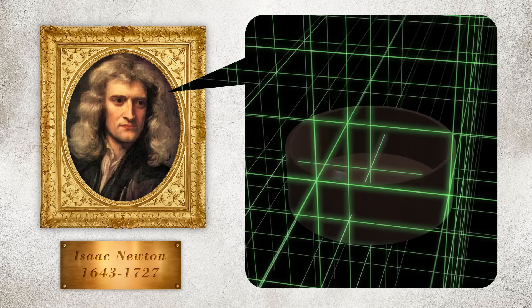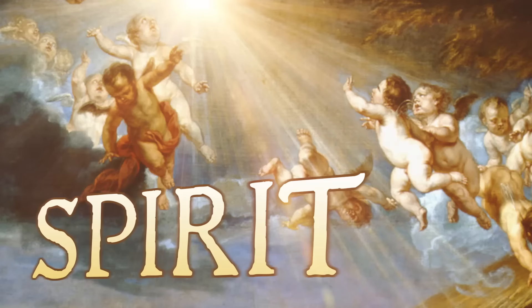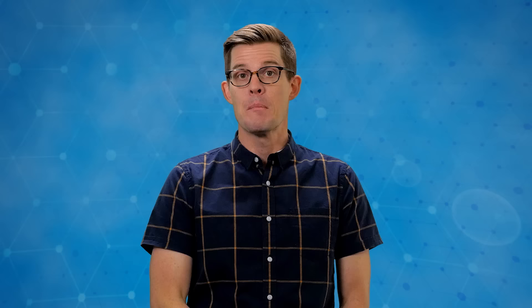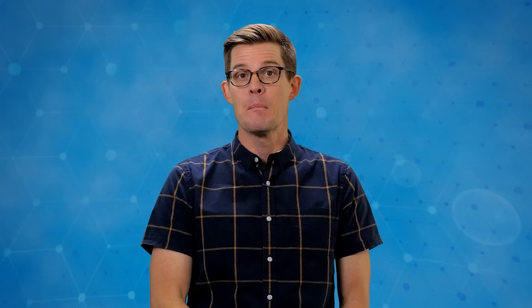Newton's solution to this riddle was that space must be a thing—an invisible but very real structure that gives all motion in the cosmos a master point of reference. He called this absolute space. Nobody could agree what it was made of, but for the next couple hundred years, science accepted that space was something.